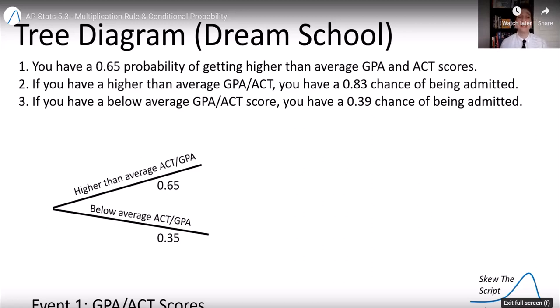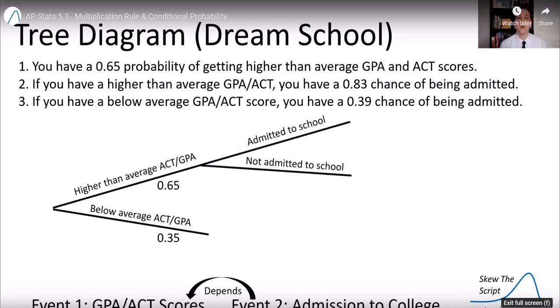Let's fill in all the branches. The next event is being admitted to college. And this depends on how well you did on your ACT and GPA. So in the world in which you had a higher than average ACT and GPA, let's follow that branch. You can be admitted to the school or not admitted to the school. And we know from the problem setup, there's 83% chance that you were admitted to school if you had a higher than average GPA and ACT.